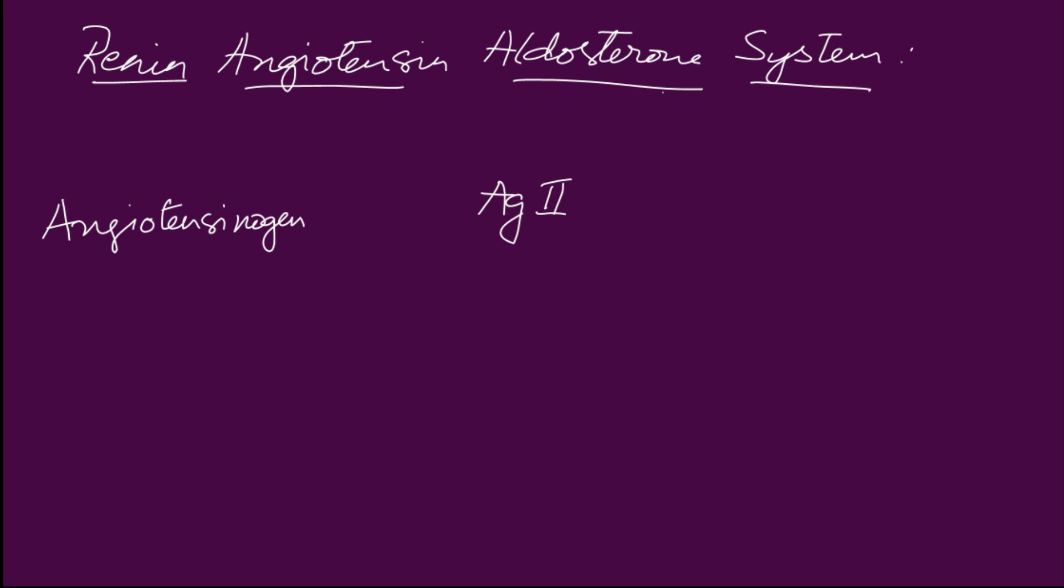To understand the mechanism of action of ACE inhibitors, let's examine the renin-angiotensin-aldosterone system. Angiotensin 2 is produced from its base compound angiotensinogen, which is formed in the liver and acted upon by renin to form angiotensin 1. Angiotensin 1 is then acted upon by angiotensin converting enzyme to form angiotensin 2.